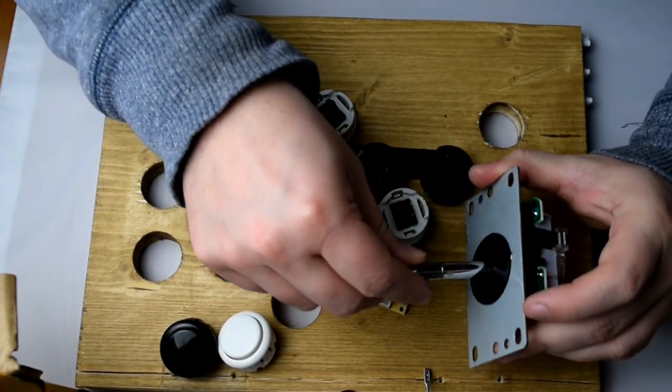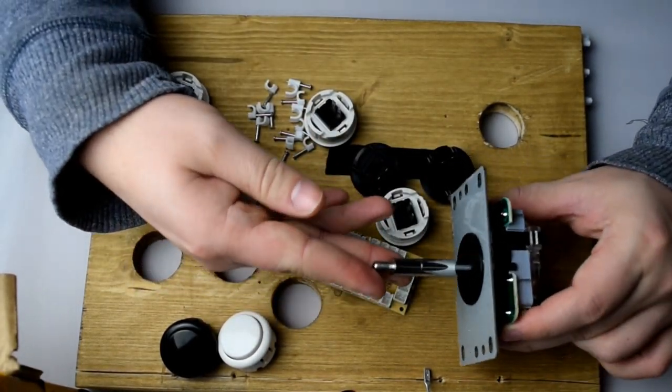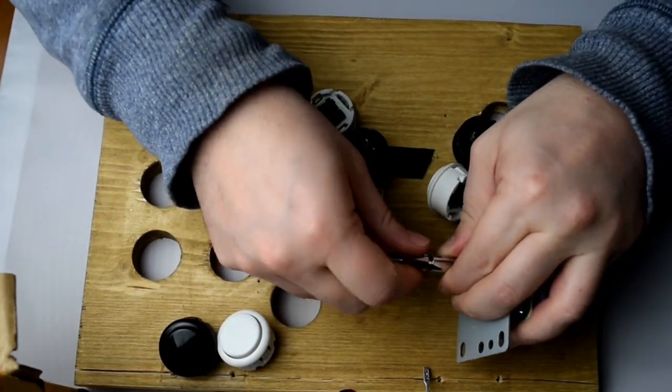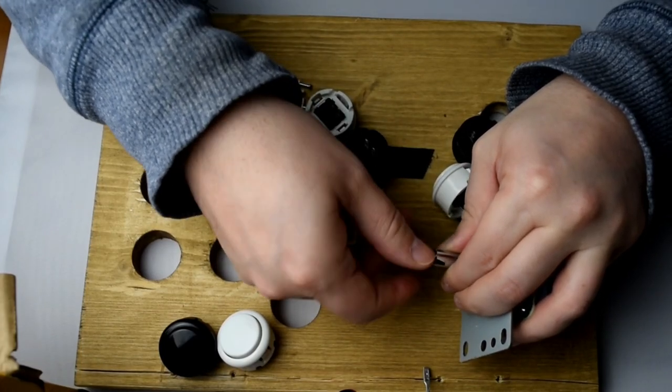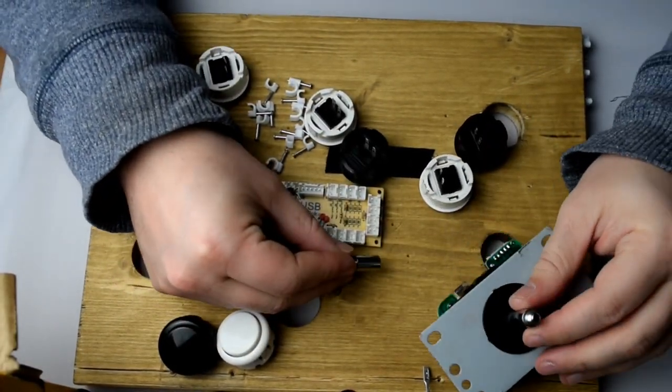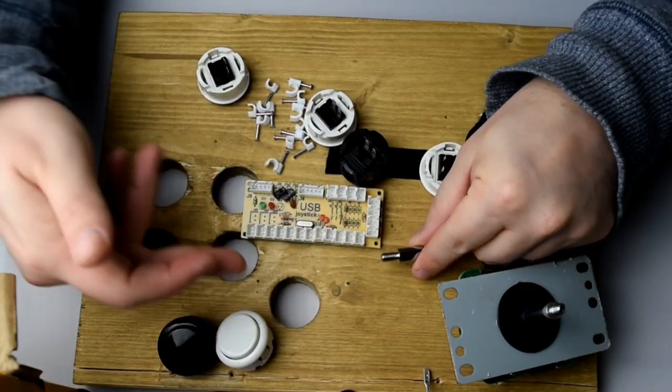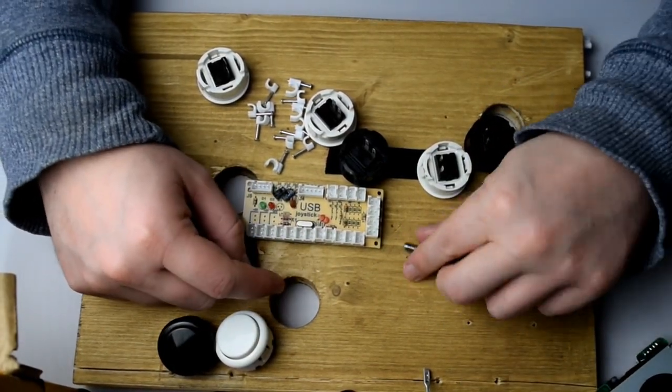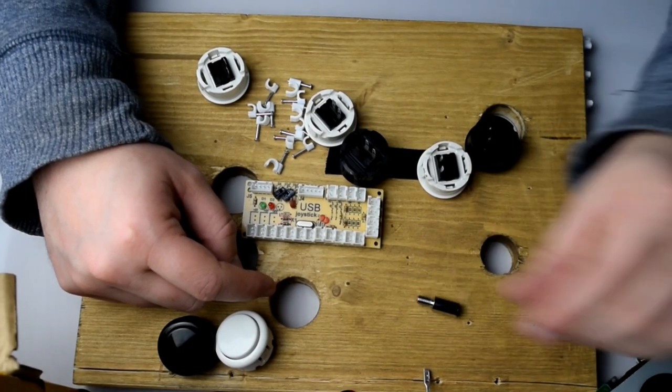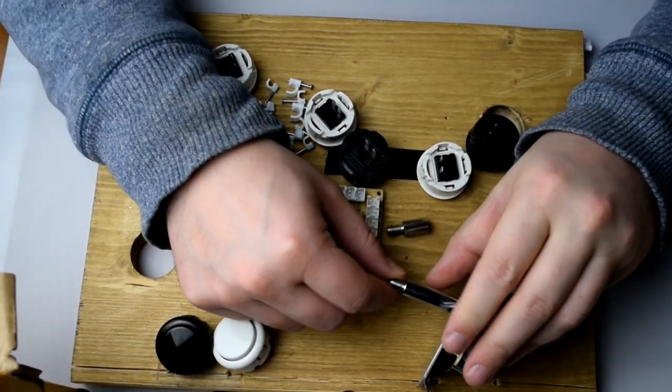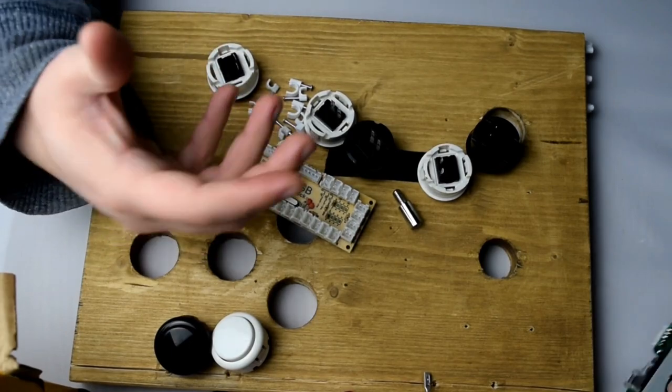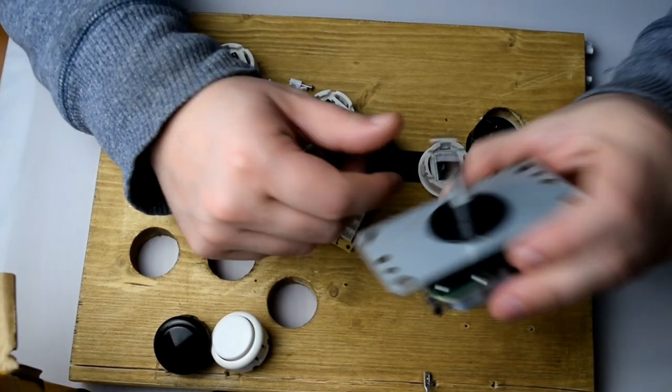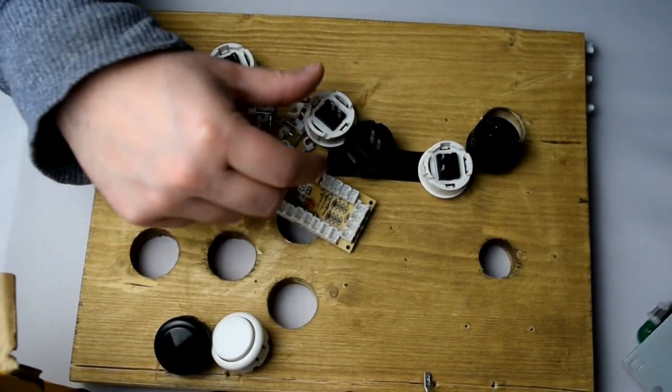First off, let's go through all our components. We've got our joystick—this is our four-way joystick—and we've actually got an extension bar on here. These aren't normally included in packs, but these things do come in handy, especially when you're embedding it into quite thick wood. It just allows the actual bar to poke out a little bit more and it's just a bit more comfortable.